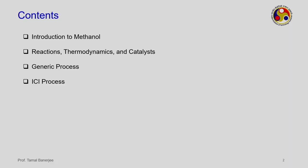We will first go through the methanol reaction kinetics and thermodynamics, then move ahead to discuss the process flowsheet. We will introduce methanol properties, discuss the reactions, thermodynamics, and catalysts, then the generic process flowsheet, and finally the flowsheet of the ICI — Imperial Chemical Industries — process, which is the patented process currently in use.